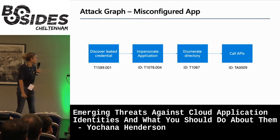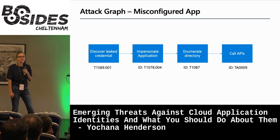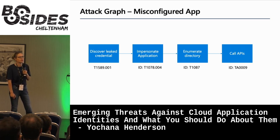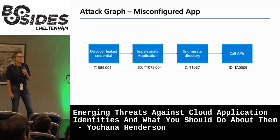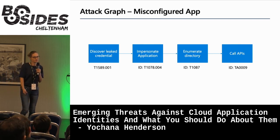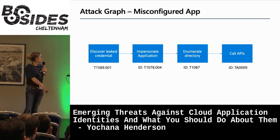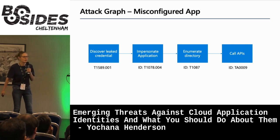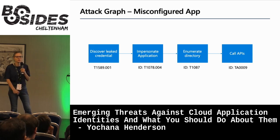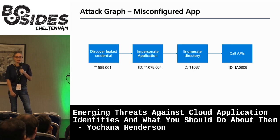For a misconfigured app, this is normally leaked credentials. We have a service that scans public GitHub, and the day we turned that on, we had to notify 3,000 tenants that they had valid credentials exposed. We do alert on it - some action is taken, some companies ignore us. Attackers discover the leaked credentials, impersonate the application, and we see a lot of directory enumeration, then calling APIs they have permissions to through those leaked credentials.